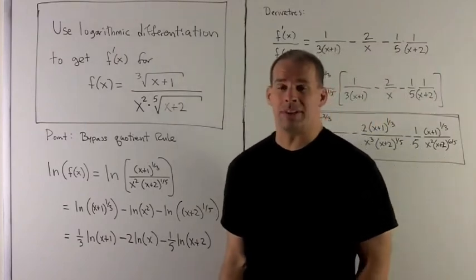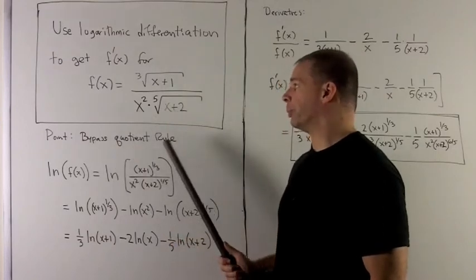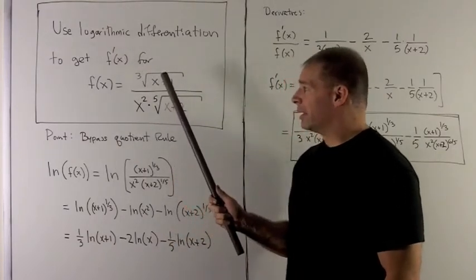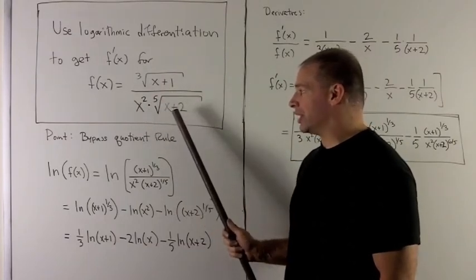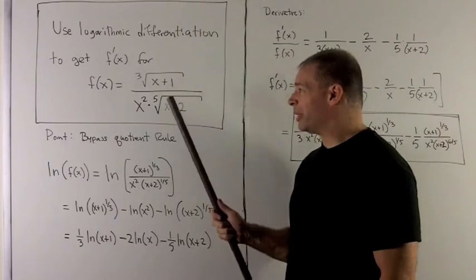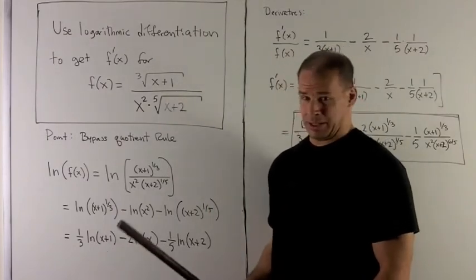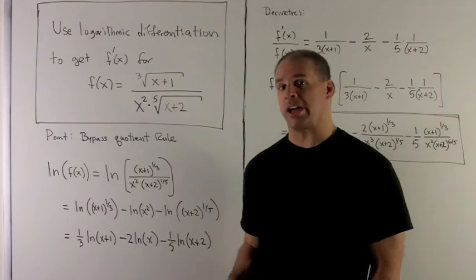The whole point of logarithmic differentiation is to let us bypass the quotient rule. If I was to take the derivative of this normally, we have an f over a g, and this g has a product rule in it, so the quotient rule is going to turn into a huge mess. Now that's not to say that logarithmic differentiation doesn't create a huge mess, but the arithmetic will be a little bit easier to keep track of.